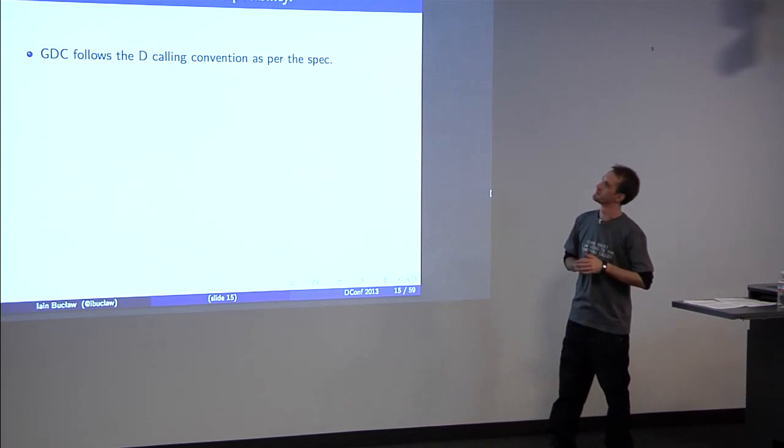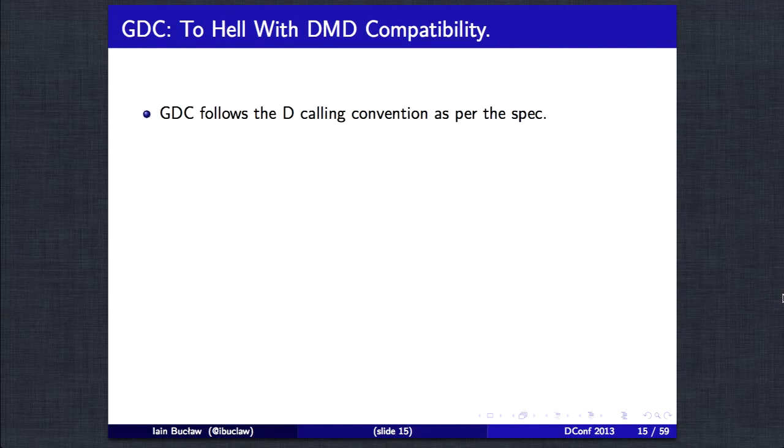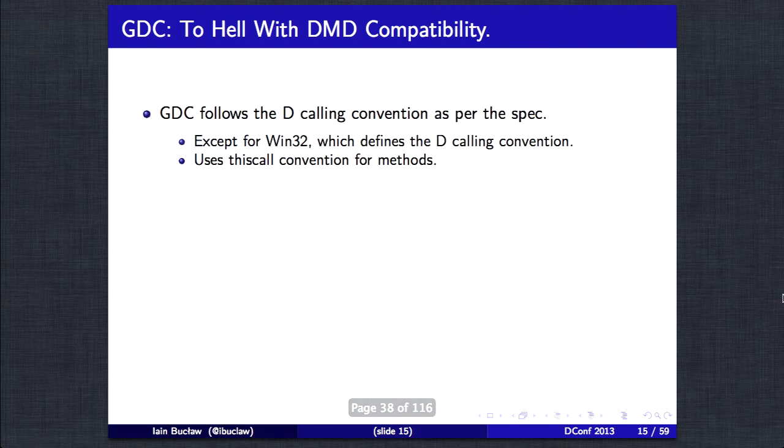I did actually change this title to be a little bit more subtle. But what the heck? To hell with DMD compatibility. So, starting off, GDC follows the calling convention as per the spec. If you look on the website, it says that the D calling convention is actually defined for Windows 32 bits. For every other platform, it's as the target is specified. So, we do this. So, we follow whatever the target supports, which may just happen to be cdecl. Except for Windows 32 bits, which actually defines the calling convention. Also for Windows, this is actually a recent change with how GCC backend works for x86. Methods and delegates will actually use thiscall calling convention.